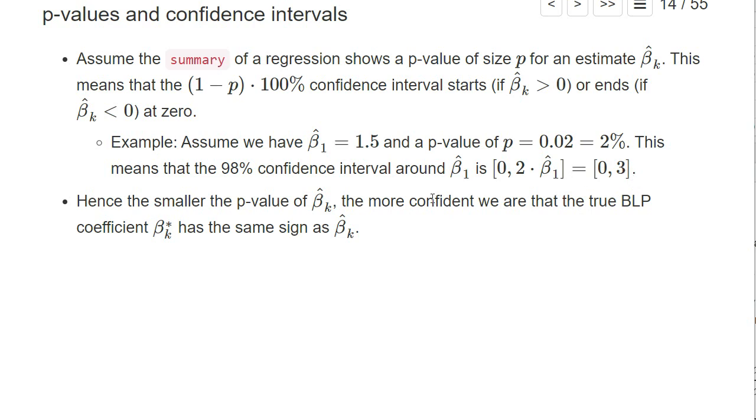In other words, the smaller the p-value, the more confident we are that the true coefficient of the best linear predictor beta star k has the same sign as our OLS estimator beta hat k.